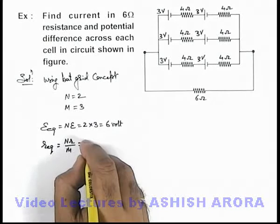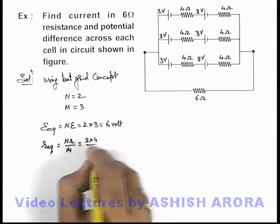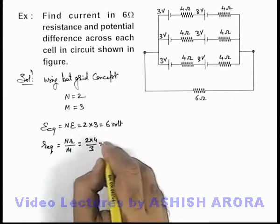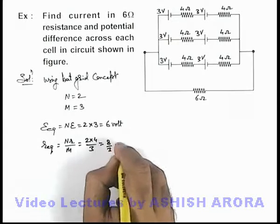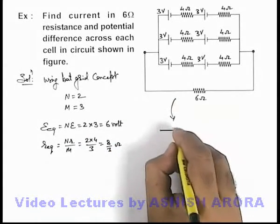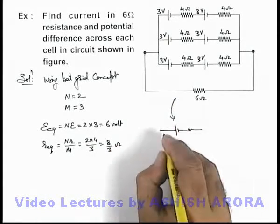So in this situation it'll be 2R by 3. Here R is 4 ohms, so this will be 8 by 3 ohms. That means the whole circuit we can reduce to a single battery with an internal resistance.